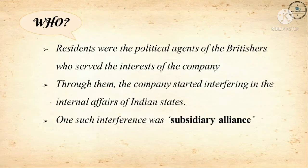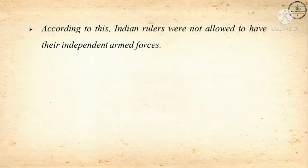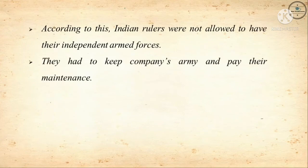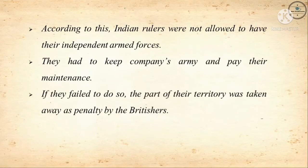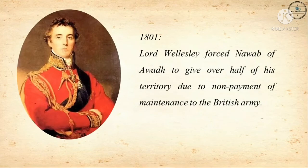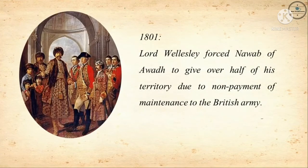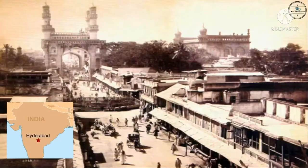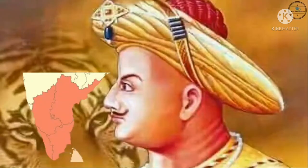One such interference was the Subsidiary Alliance. According to this policy, Indian rulers were not allowed to have their own independent armed forces. They had to keep the company's army and pay for its maintenance. If they failed to do so, part of their territory was taken away as a penalty by the British. In 1801, Lord Wellesley forced the Nawab of Awadh to give one half of his territory due to non-payment of maintenance of the British army. So Hyderabad was annexed by the British through this policy.